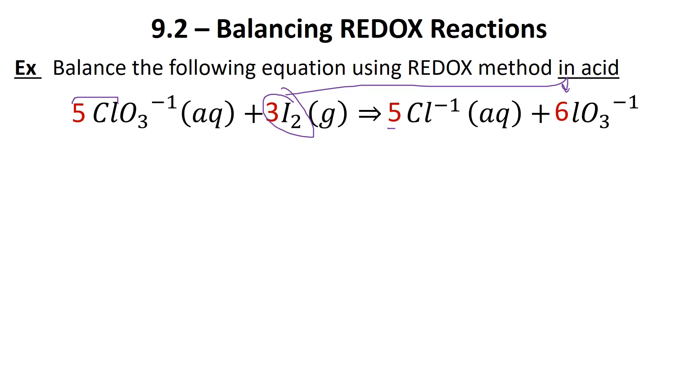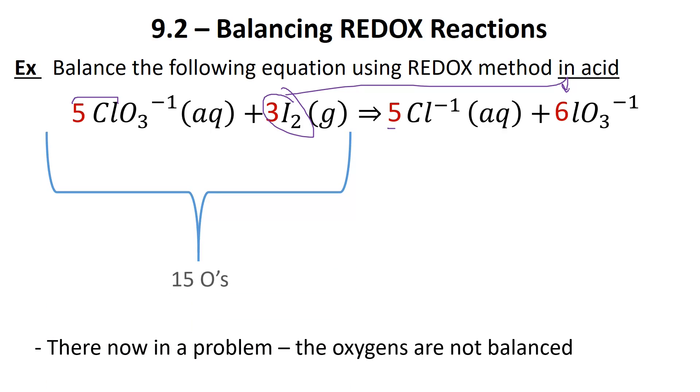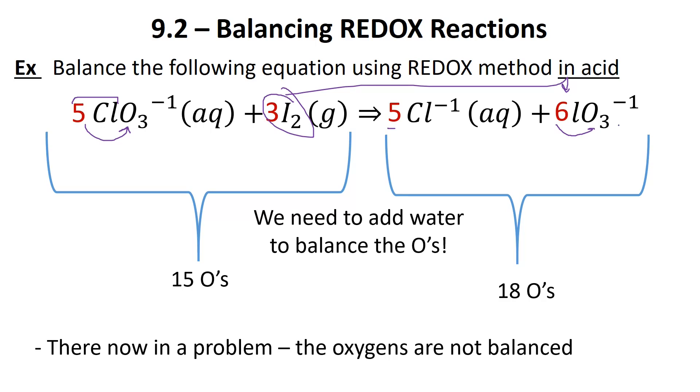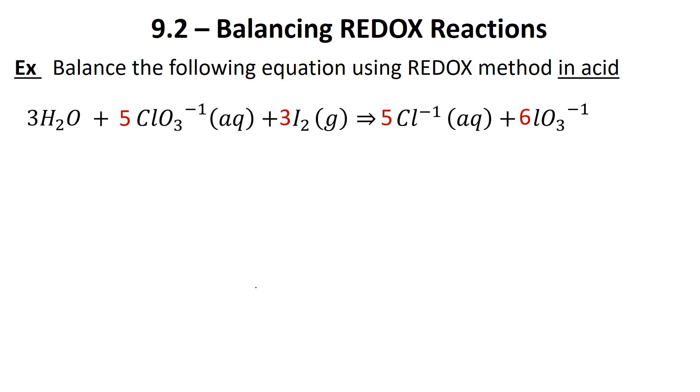Like our last example, we were done. But what hasn't been balanced in this reaction is actually two things. Firstly, the oxygen hasn't been balanced. If we count all this up on the left side of our equation, we have 15 oxygens. Five times three is 15. On the other side, we have six times three, which is 18 oxygens. We're three oxygens short on the left-hand side. One of our rules says we have to add water to balance the oxygens. We're going to add three H2Os to the reactant side.